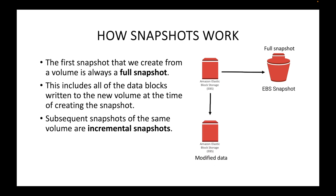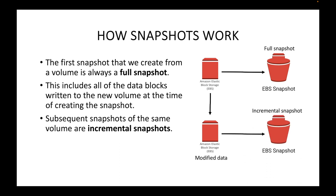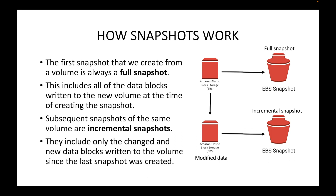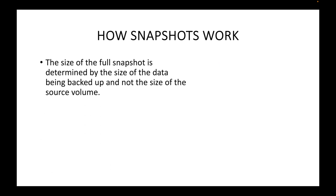Subsequent snapshots of the same volume are incremental snapshots. After some time, if you modify or add data to the EBS volume and then take another snapshot, it will be an incremental snapshot — you won't be taking a full backup. It will only back up the new or modified data, only the changed and new data blocks written to the volume since the last snapshot was created.